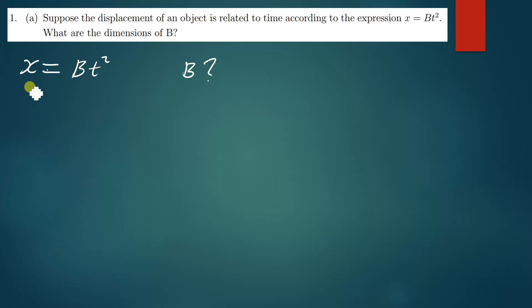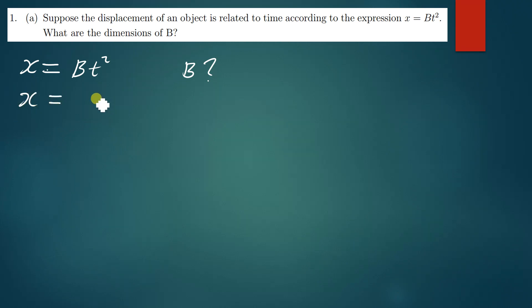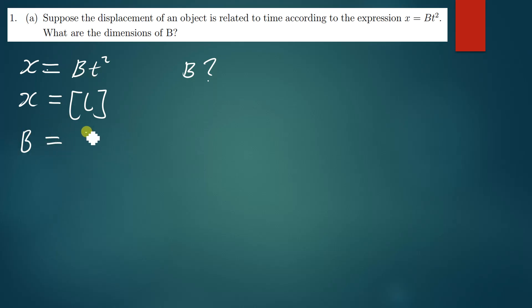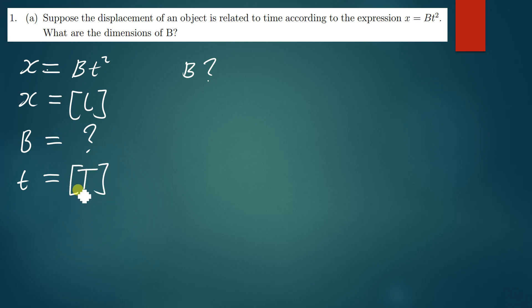We need to know the dimensions for displacement and for time. Displacement is denoted by x — the dimension for displacement is capital L. We also need the dimension for t: the dimension for time is simply capital T. Now, how do we find the dimensions for b?